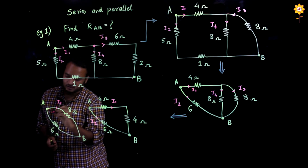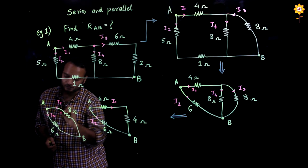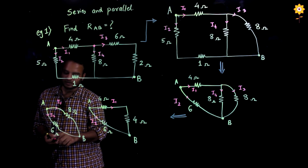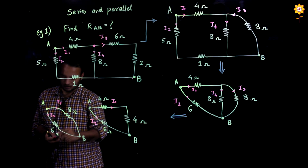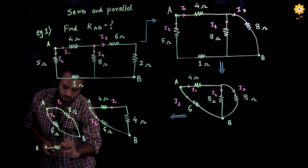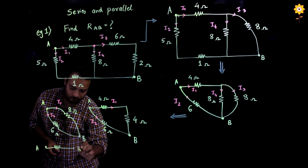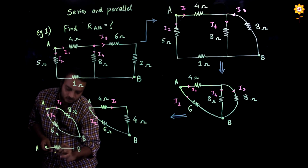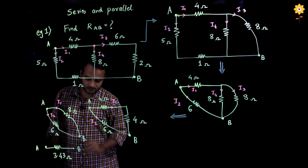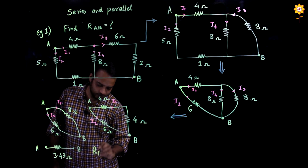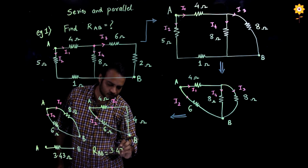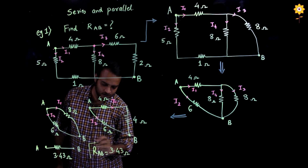This is current I1 flowing and this is current I2. Now when I further see, I can easily make out that this 8 ohm and this 6 ohm are in parallel, so I can reduce it to make one resistance. 6 parallel 8 will give me the answer 3.43 ohm. This gives me the final answer: the resistance between terminal A and B is 3.43 ohm. So this is my final answer.